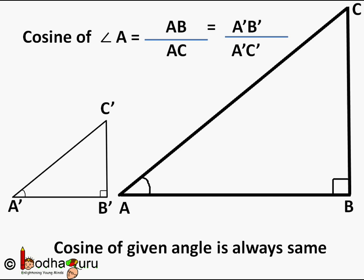So the ratio of adjacent side and hypotenuse, that is AB to AC or A'B' to A'C', is same because angle A is same.